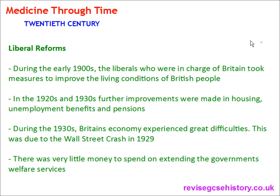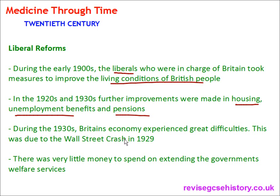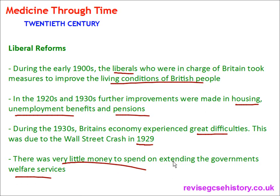During the early 1900s the Liberals, who were in charge of Britain, took measures to improve the living conditions of British people. In the 1920s and 1930s further improvements were made in housing, unemployment benefits and pensions. During the 1930s Britain's economy experienced great difficulties due to the Wall Street Crash in 1929, when America's stock market experienced major difficulties, and there was very little money to spend on extending the government's welfare services.